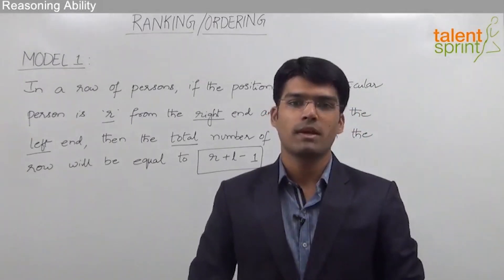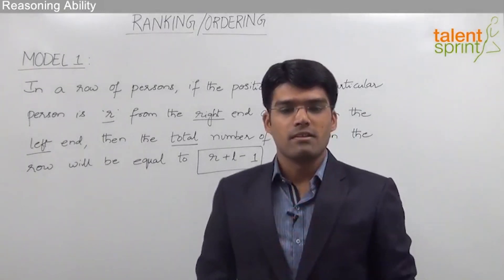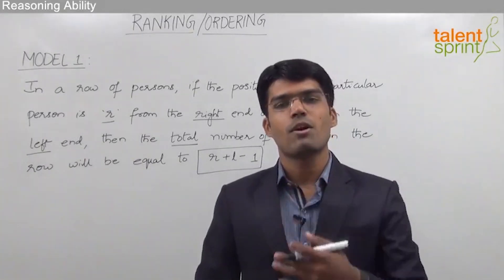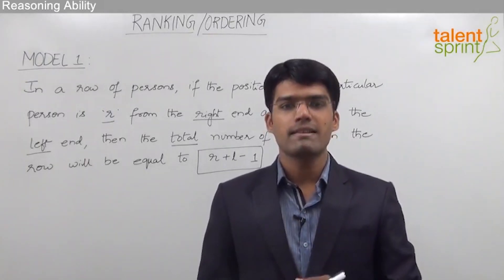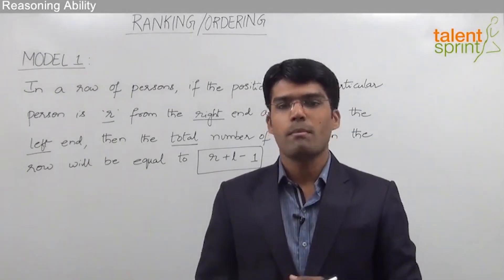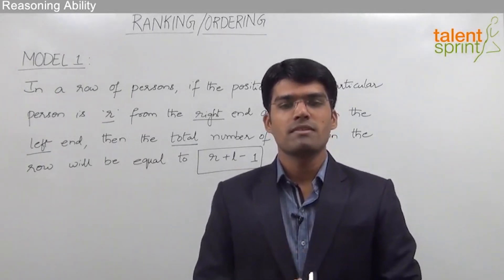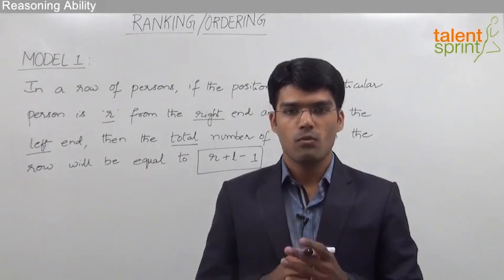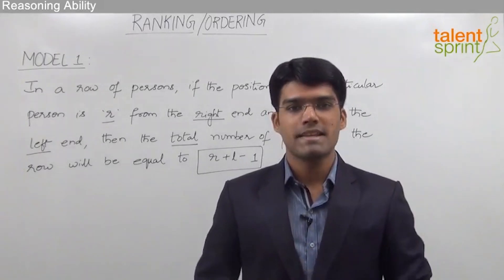Similarly, let us assume a group of persons have been ranked from top to bottom. When we know the rank of one particular person from the top end as well as the bottom end, the total number of persons in that group equals the rank from the top plus the rank from the bottom minus 1. We can always find the total number of persons whether they are arranged in a row or column, as long as we know the position of one person from both ends.